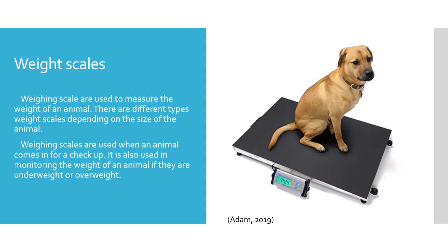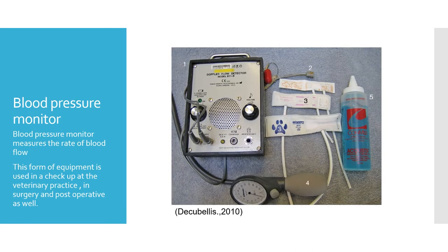A problem that can occur with some scales is that for large dogs it can become a trip hazard, with the scales having to be flush with the floor. Also, with certain scales it can be slippery for the animal to stand on, so it is advised to put a towel or something over the scales in order for the animal to have grip.